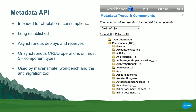Just as with your data, you can access metadata off-platform. Salesforce provides lots of different APIs — the REST API, SOAP API — allowing you to access your data off-platform. The same is true for metadata: Salesforce gives us the Metadata API, which allows deploys and retrieves — asynchronous file-based operations — and also CRUD operations to read and update metadata. The Metadata API is used behind the scenes for tools like MavensMATE, Workbench, and the Ant Migration tool.